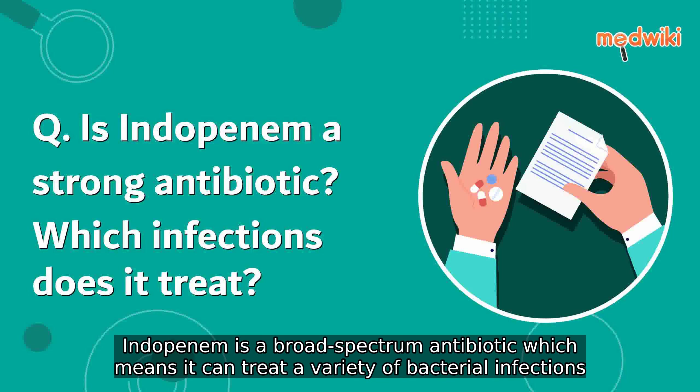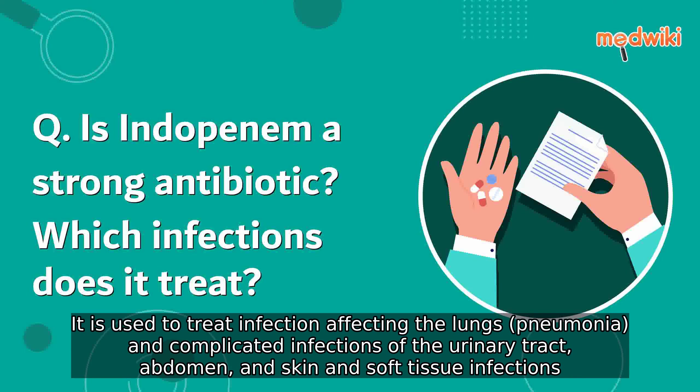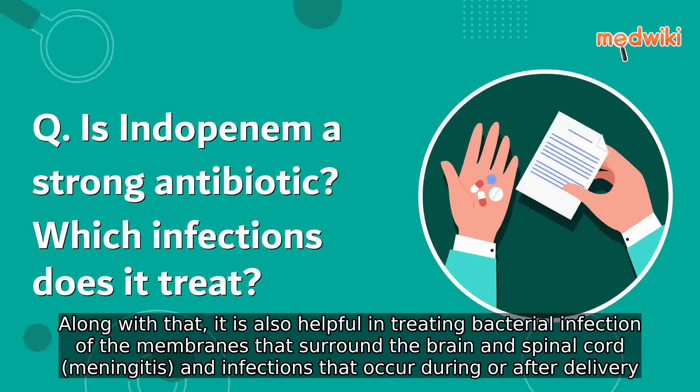Endopaname is a broad-spectrum antibiotic, which means it can treat a variety of bacterial infections. It is used to treat infections affecting the lungs, pneumonia, and complicated infections of the urinary tract, abdomen, and skin and soft tissue infections.